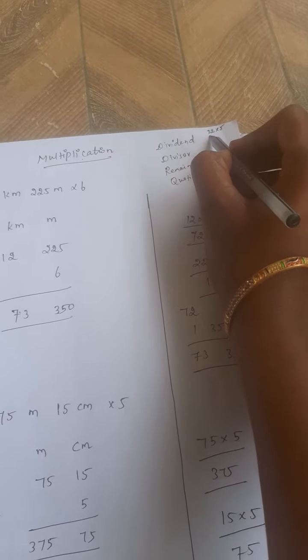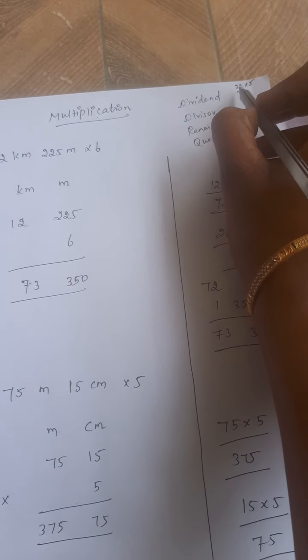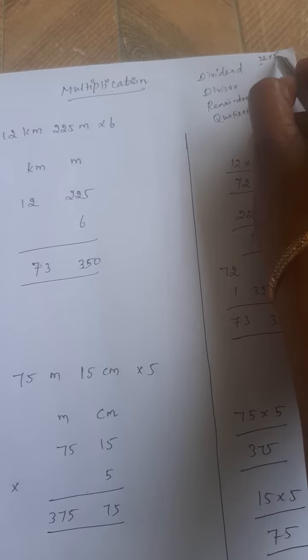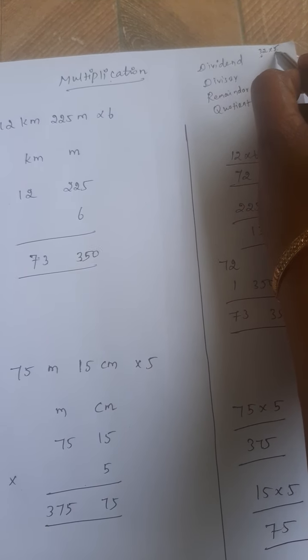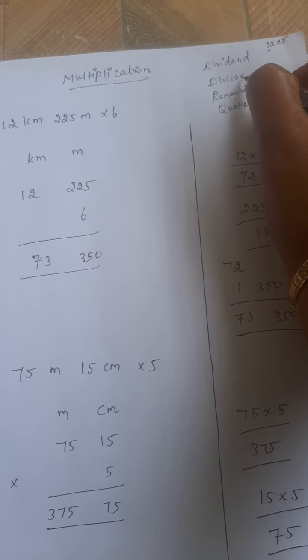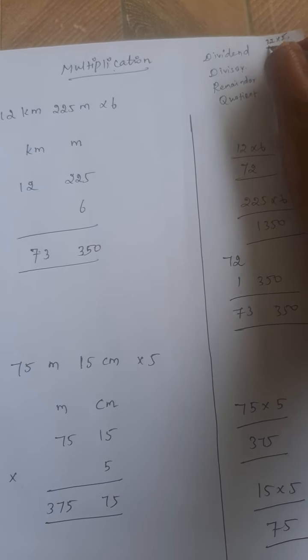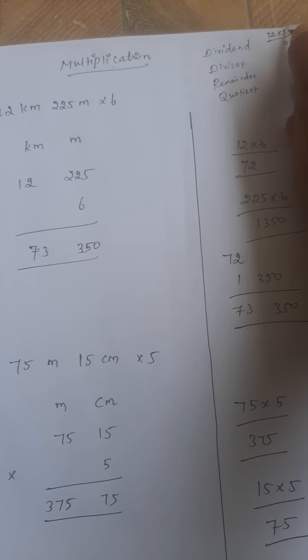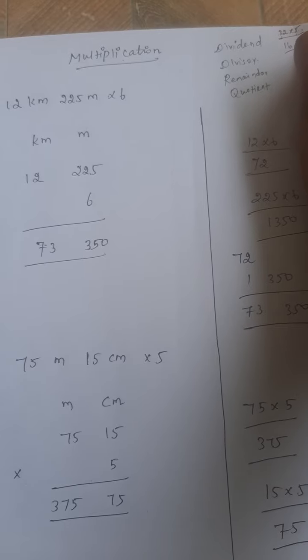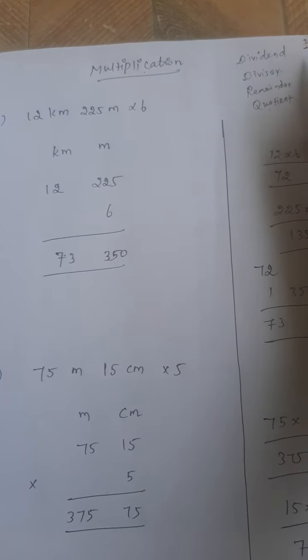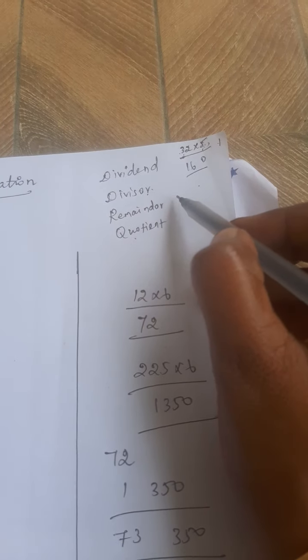For example, 32 into 5. The 32 is a dividend, and which number we can multiply that dividend is called divisor. And what is the remaining value? For example I can multiply this: 0, remainder 1, 3, 5, 15 plus 16. That 160 is a quotient. 116 is a quotient.